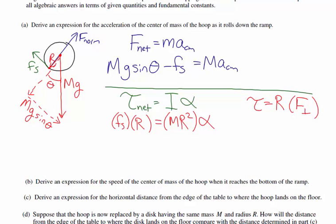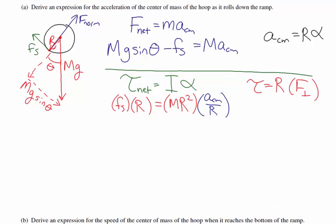The final piece is the rolling without slipping relationship: the acceleration of the center of mass equals R times the angular acceleration. We can use this to write both equations in terms of the angular acceleration alpha, or in terms of the acceleration of the center of mass. Since we're looking for the center of mass acceleration, I substitute that the angular acceleration equals A over R, which allows me to simplify.